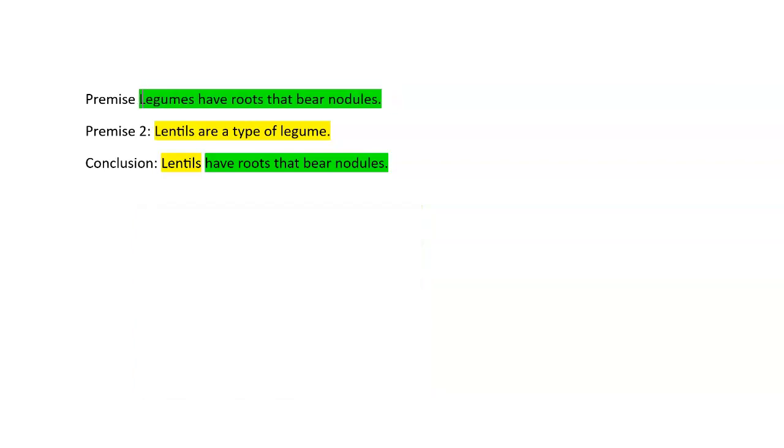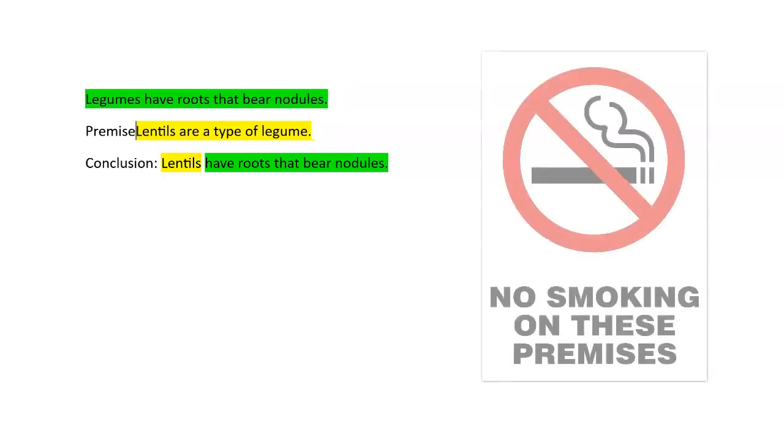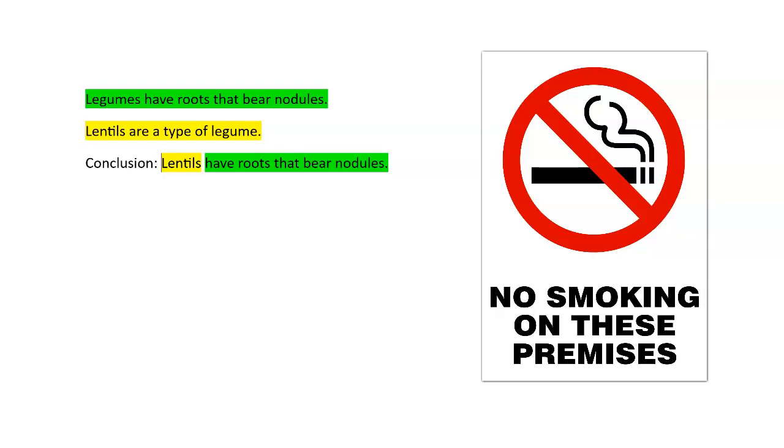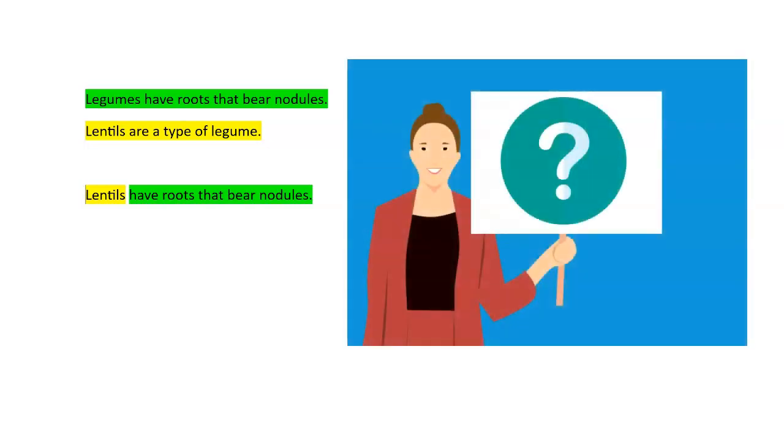All right, we can make this a little bit more difficult by not saying that these are premises. We're going to keep the conclusion separate, okay? All right, so that's a little bit trickier. We've got our conclusion. Lentils have roots that bear nodules. Maybe we can make this more like a question.